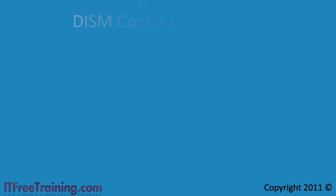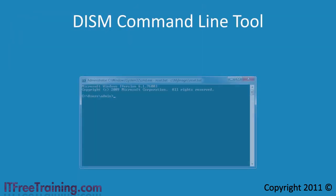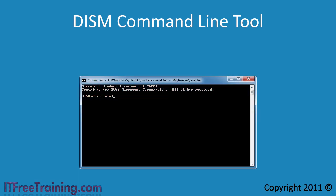Now let's have a look at how to use the DISM command line tool. Before I start using the tool, I am going to add a directory to the environmental variable path. This will make sure that when I run the tool, Windows can find it. If you have the Windows AIK installed on the computer, you can run the deployment tools command prompt from the start menu and this step will be done for you.